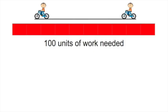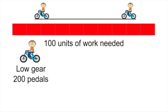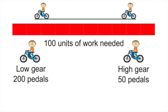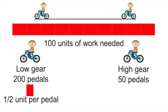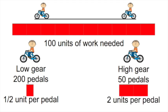Let's say it takes a hundred units of work to move our bike from one spot to the other. In low gear it takes us 200 pedals to make that trip, and in high gear it only takes us 50 pedals. So in low gear, each time we pedal the bike we use up one half unit of work. In high gear, each time we pedal the bike we use up two units of work.